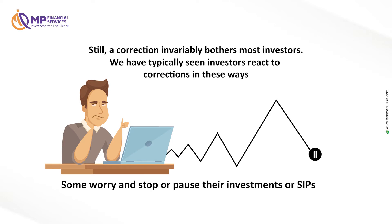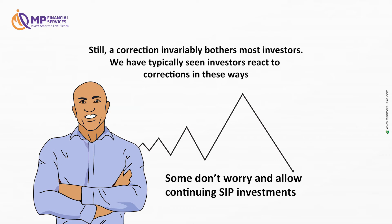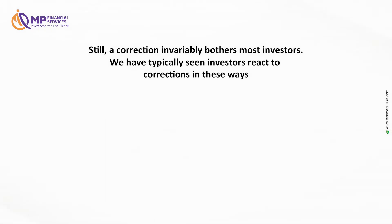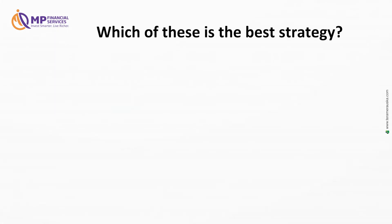Some worry and stop or pause their investments or SIPs. Some don't worry and allow continuing SIP investments. Some others want to plow more money on correction in a lump sum. Which of these is the best strategy?